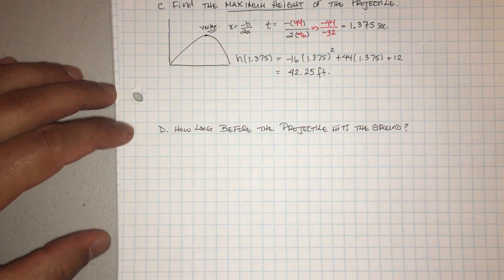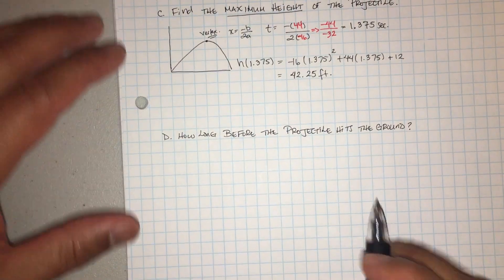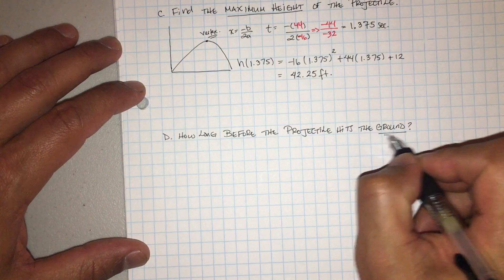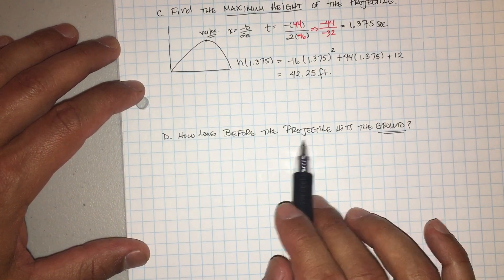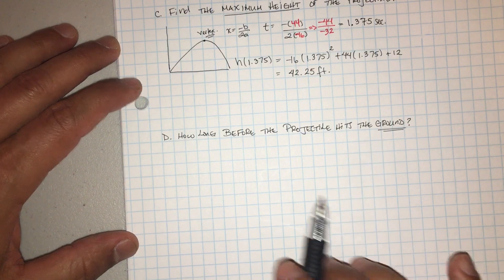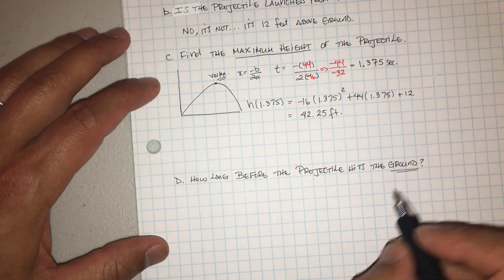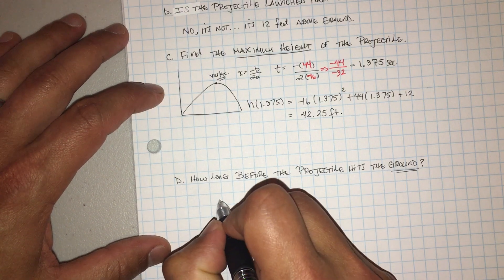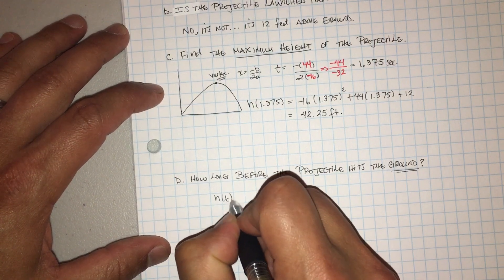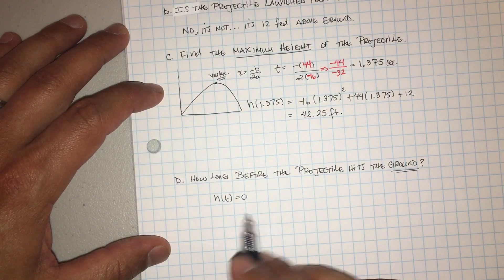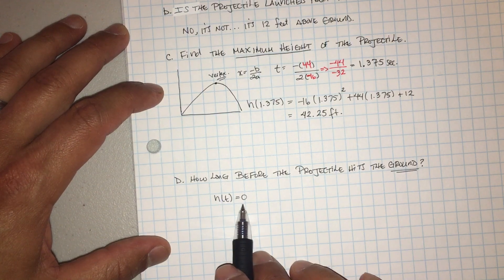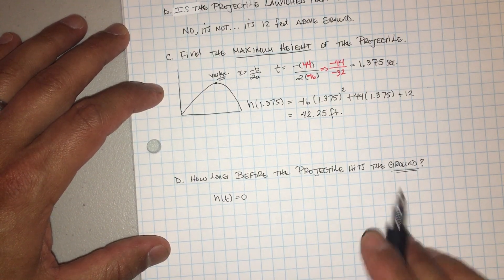Alright, last problem. It says how long before the projectile hits the ground? Cuanto tiempo dilata antes de que el proyectil caiga al piso? So remember what we said, when we're solving this you want to set it equal to whatever they're asking you. So remember the ground is zero, so what I'm going to do is I'm going to set my height, whatever that is, equal to zero. Voy a agarrar la ecuación y lo voy a igualar a cero porque va a caer al piso.